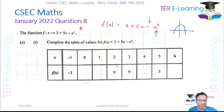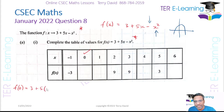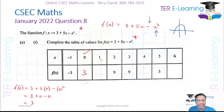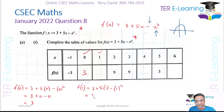They give us a table to complete, which is a typical exam question. We need to find f(0): substituting into the function gives 3 plus 5 times 0 minus 0 squared, which equals 3. Next, f(1) is 3 plus 5 times 1 minus 1 squared, which gives 3 plus 5 minus 1. So 3 plus 5 is 8, and 8 minus 1 is 7.